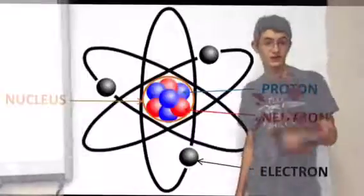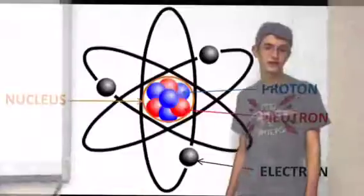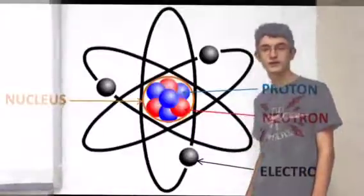The number of neutrons can be found by subtracting the atomic number from the atomic mass and rounding. The number of electrons is always the same as the number of protons.